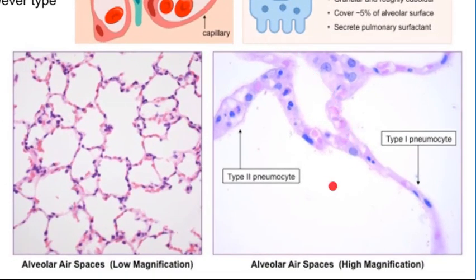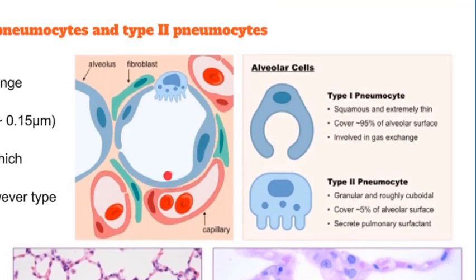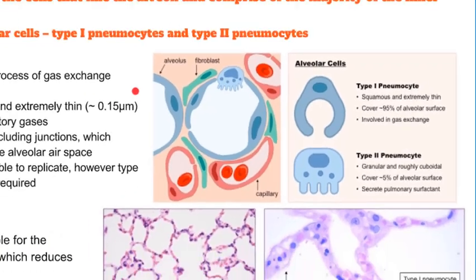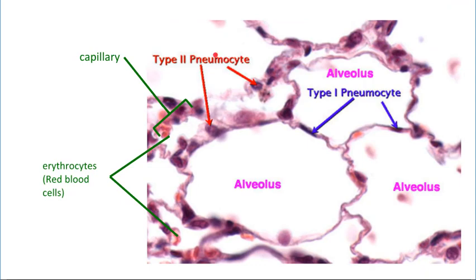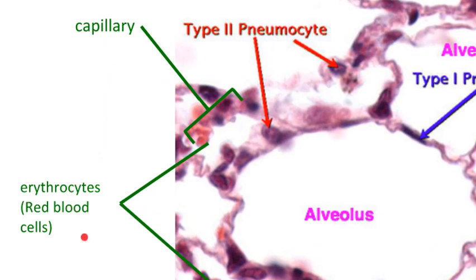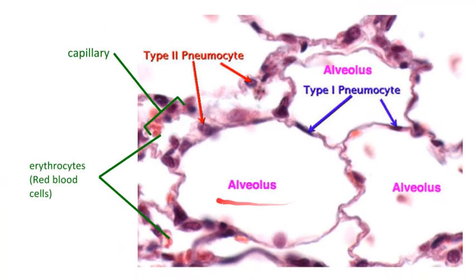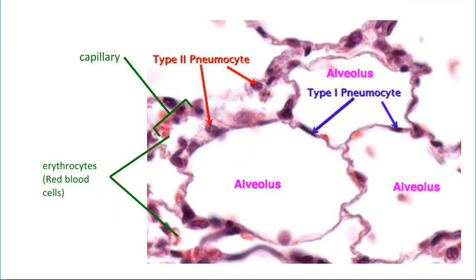Looking at the magnified image, type 2 pneumocytes are more circular, whereas type 1 pneumocytes are very flat. In the diagram, the flat type 1 pneumocytes are covering most of the surface area — that's where gas exchange happens — while the type 2 pneumocytes are secreting the pulmonary surfactant. You can also see the capillaries on the left side and the erythrocytes (red blood cells) where the oxygen exchange is occurring. Those are the two specific kinds of alveolar cells you need to be able to distinguish between.